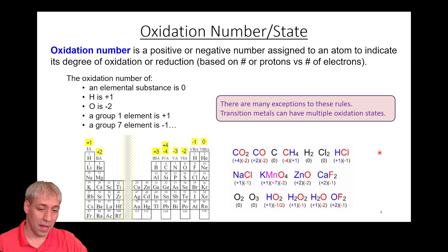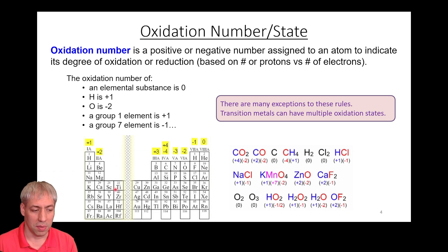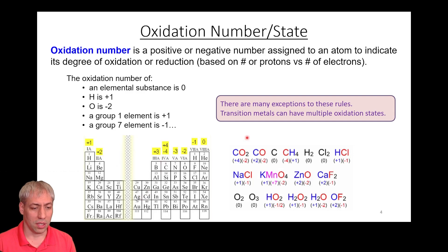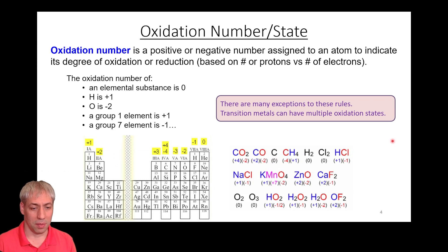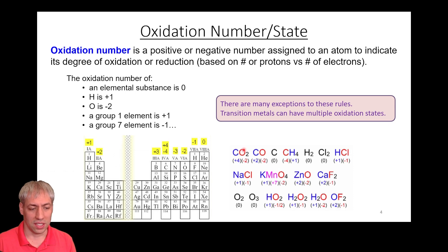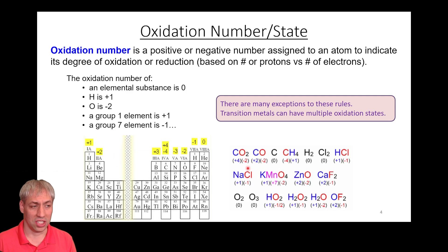Note that there are many exceptions, particularly for transition metals, which can exist in many different oxidation states. But these rules are a general guideline that works well, especially for carbon, oxygen, nitrogen, and hydrogen species. This is formal bookkeeping — carbon being +4 in CO₂ means it has effectively lost four electrons to oxygen. Note these aren't ionic species; it's still a covalent bond, but we use formal oxidation numbers for bookkeeping.